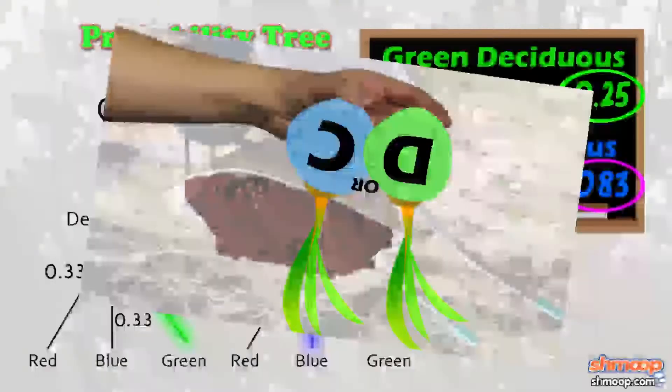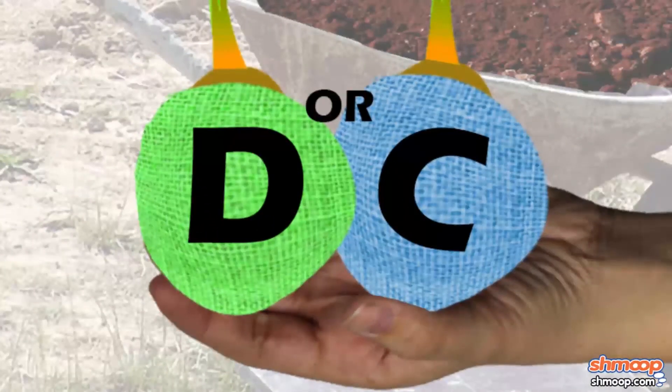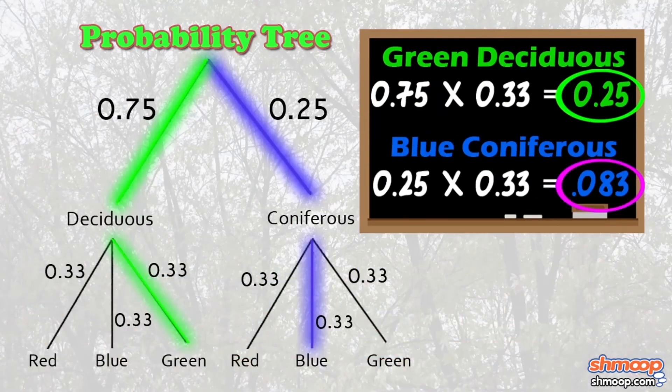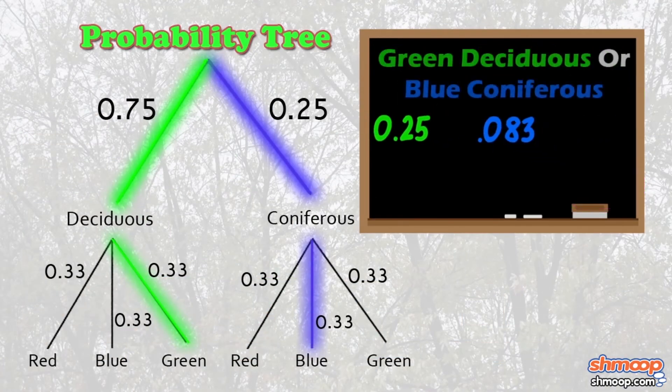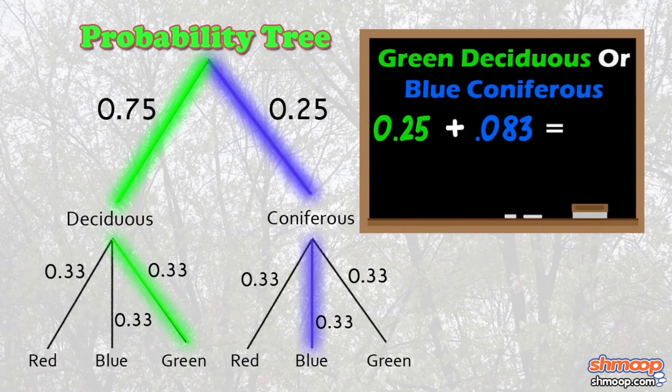What if we want to know the chances of getting a green deciduous or a blue coniferous? Well, easy. We just add the two individual probabilities together. So, 0.25 plus 0.083 equals 0.33, or 33%.